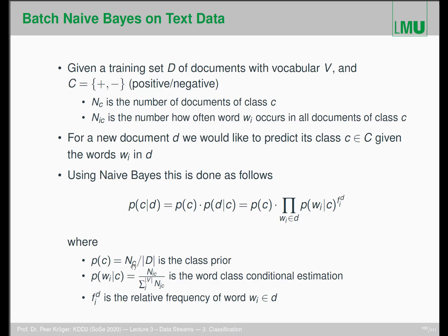Using Naive Bayes, this can be done easily. We need the class prior, which is the number of documents for one class divided by the total number of documents. The word-class conditional estimates are the number of times a word i appears in documents of class c, weighted by the relative frequency of that word in a document. This is quite easy to do with Naive Bayes in a batch scenario. The question is how we can maintain those probabilities over time.